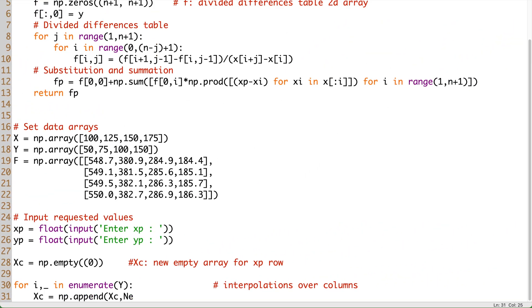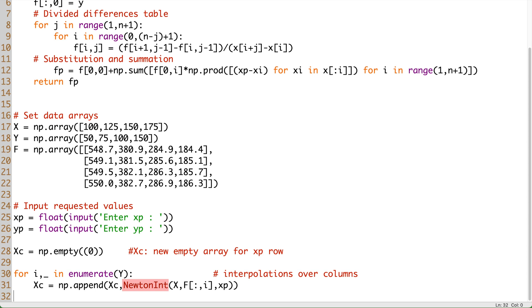Inside the loop, there is only one line that includes the call of the Newton interpolation function with arguments x, f at the current column, and of course, xp. The return value from this function will be appended, which means that is added as a new element to the array xc. By the end of this loop, the array xc will contain all elements of a new row that corresponds to xp.